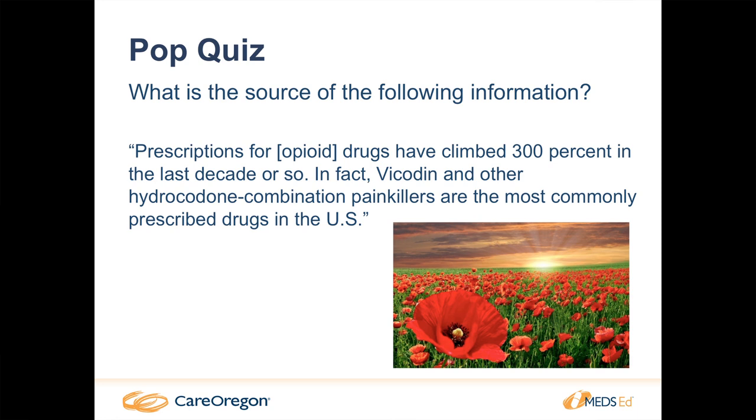A quick pop quiz: what is the source of the following information — 'Prescriptions for opioids have climbed 300% in the last decade and Vicodin and other hydrocodone combination products are the most commonly prescribed drugs in America'? It was actually in Consumer Reports. It was a really interesting article with great information, including the top five things to think about with opioid therapy. It just goes to show that our patients are getting this information from everyday news outlets. They may be seeing good information, but they may not be seeing good information.